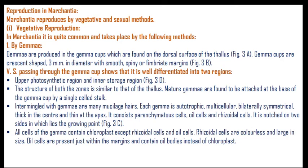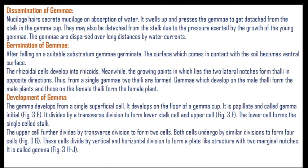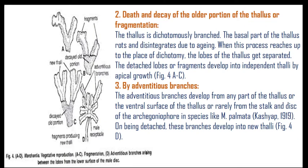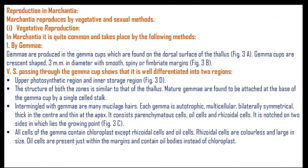Marchantia reproduces by vegetative and sexual methods. Vegetative reproduction takes place by three ways: first, formation of gemmae; second, fragmentation; third, by adventitious branches. In vegetative reproduction, gemmae are produced in the gemma cup, which is found on the dorsal surface of the thallus.